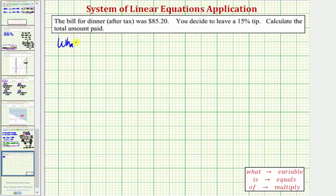what is 15% of $85.20? Again, once we find the tip amount, we'll have to add it to the bill amount to find the total amount paid.